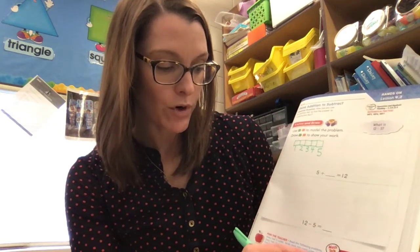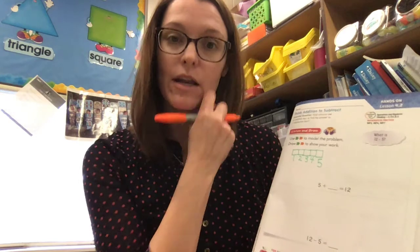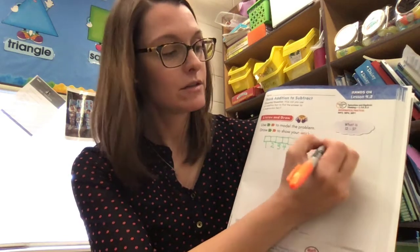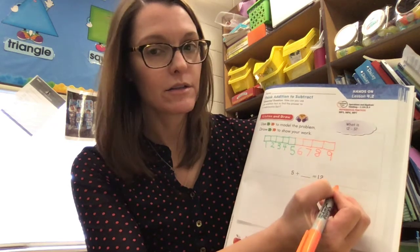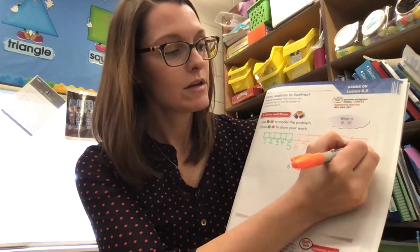Then it said Sarah gave him more cubes — now Joey has 12 cubes. So I'm going to take my orange and draw some more cubes until there are 12 all together. I'm going to count while I'm drawing them. We stopped at five and I'm going to go all the way to 12: five, six, seven, eight, nine, ten, eleven, twelve.